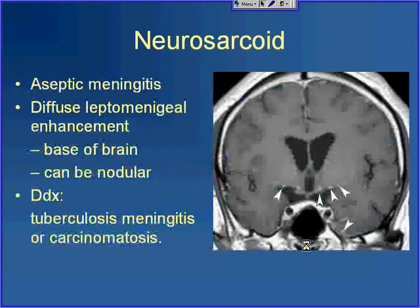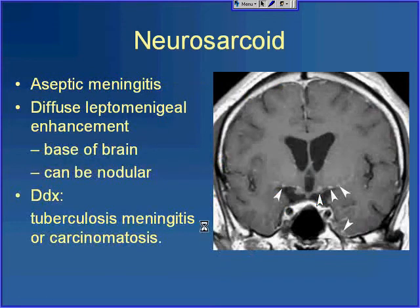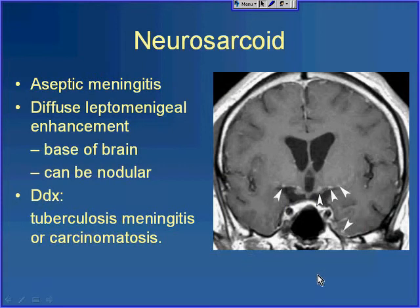One presentation of neurosarcoid is aseptic meningitis, with diffuse leptomeningeal enhancement tending to go to the base of the brain. This can be quite nodular — as in this example, where you can see nodular enhancement of the leptomeninges on T1 post-contrast imaging. If you have this presentation, you'd include sarcoid in your differential, but leptomeningeal carcinomatosis, tuberculosis, or other infectious meningitis would probably come first.